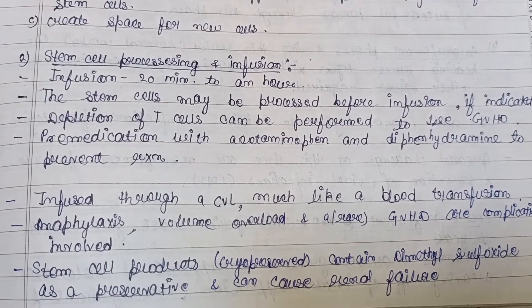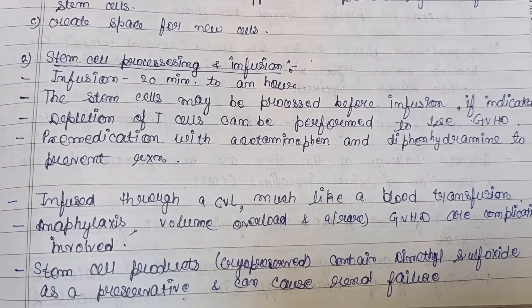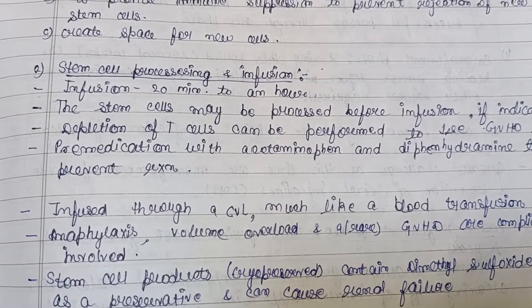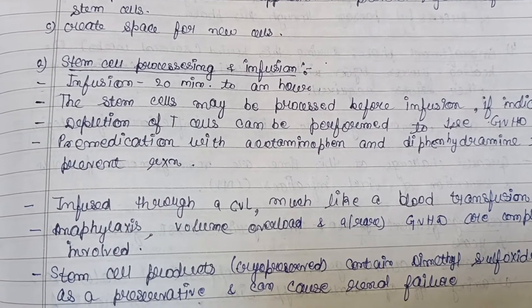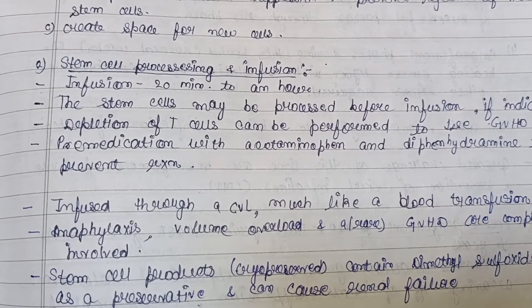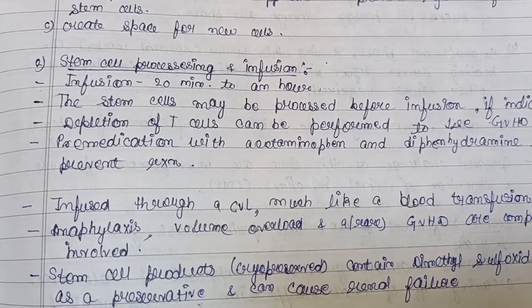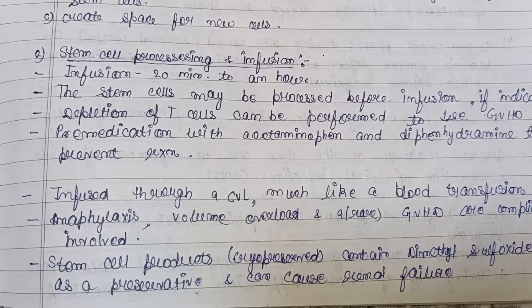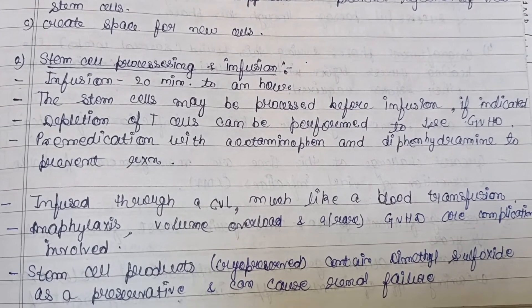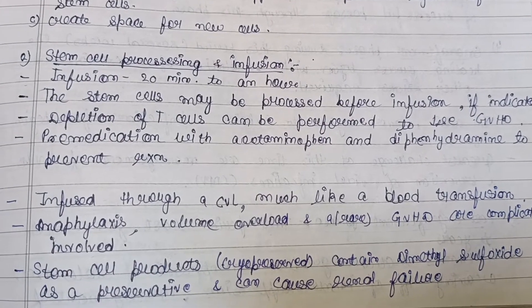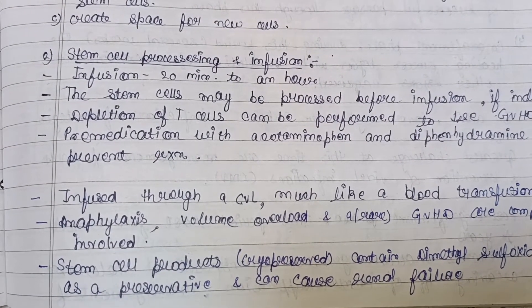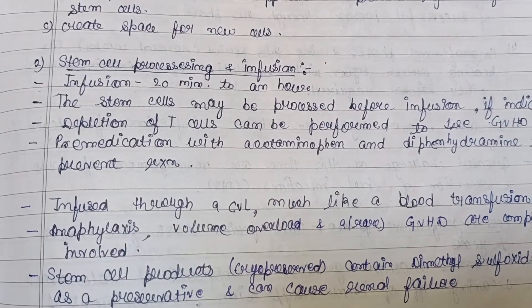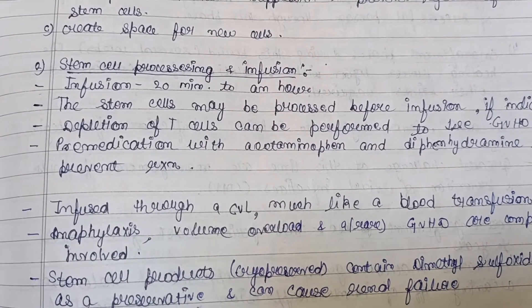Complications during infusion include anaphylaxis, volume overload, and in rare cases, GVHD — graft versus host disease, which occurs when stem cells from a donor are infused into the patient's body. Stem cell products are cryopreserved and contain dimethyl sulfoxide as a preservative, which can also cause renal failure.